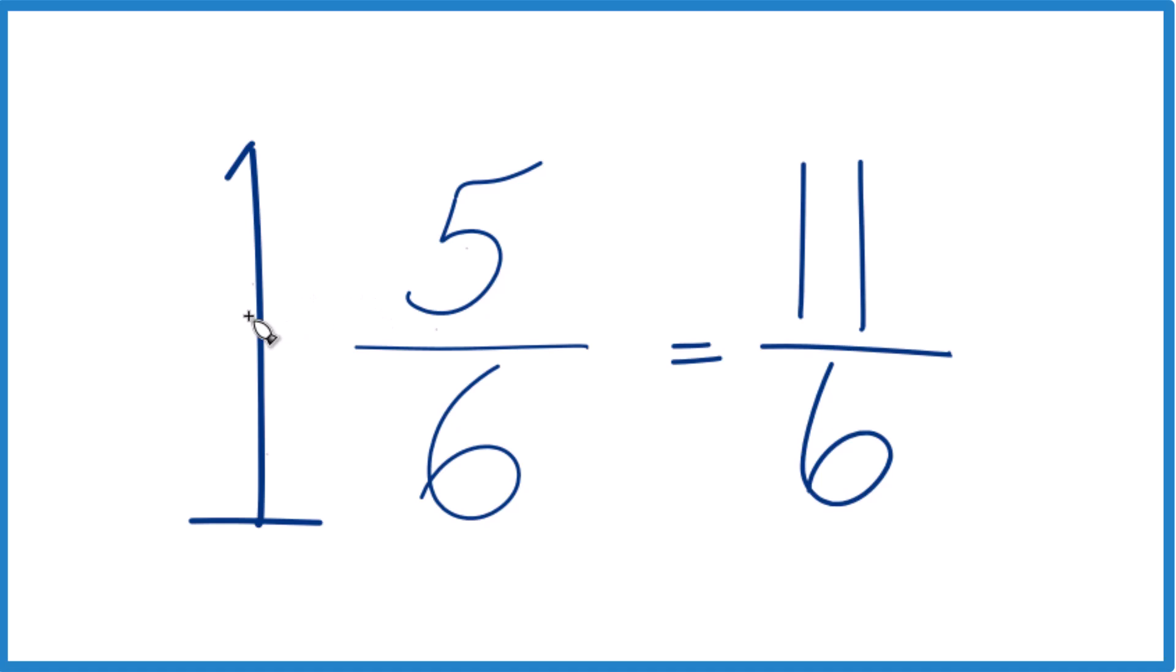So let's do it again. 1 times 6, that's 6. 6 plus 5, that's 11, that's the numerator. Bring the denominator across, and you got it.